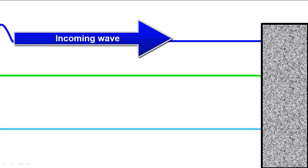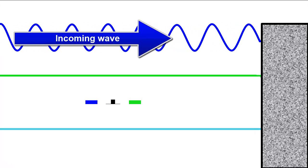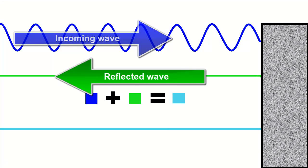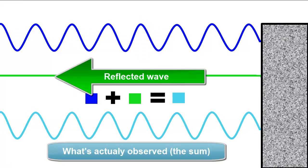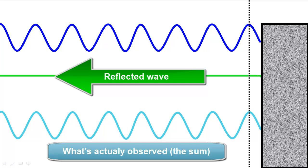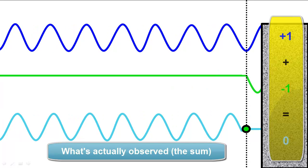Back to the animation, let's model a wave coming in to a fixed surface and being reflected. The blue wave is coming in, the green wave is being reflected, and the turquoise wave is the sum of those two waves. You can see here that you've got a positive value for the blue wave, a negative value for the green wave, and it'll add up to zero if the amplitudes are the same, which we'll be assuming.